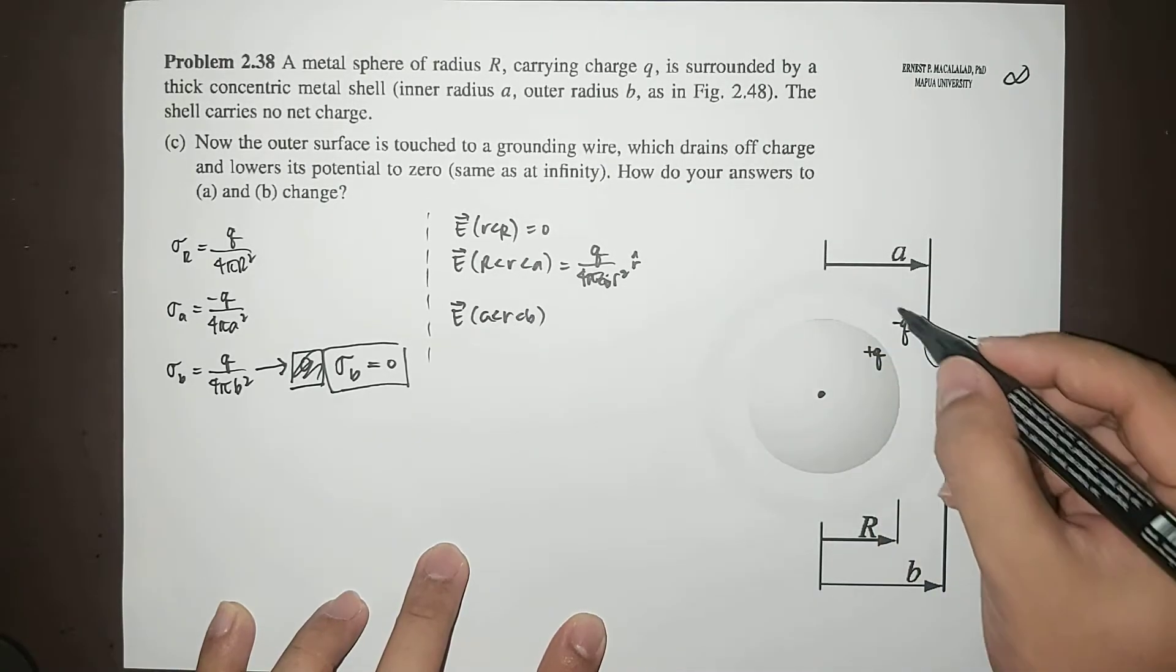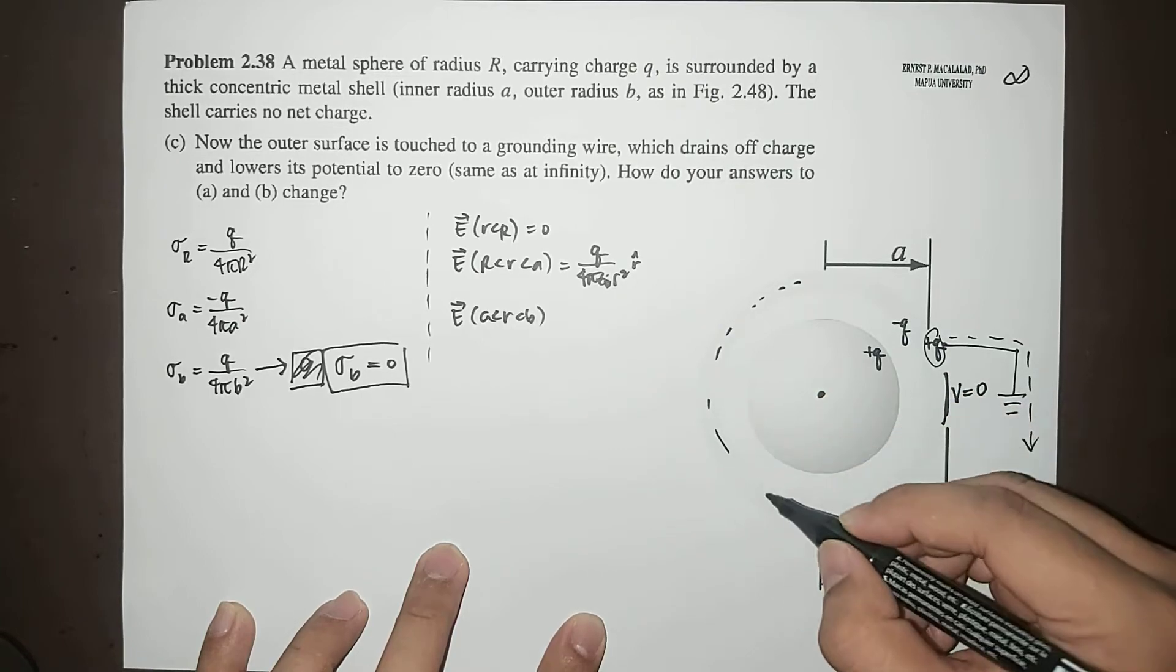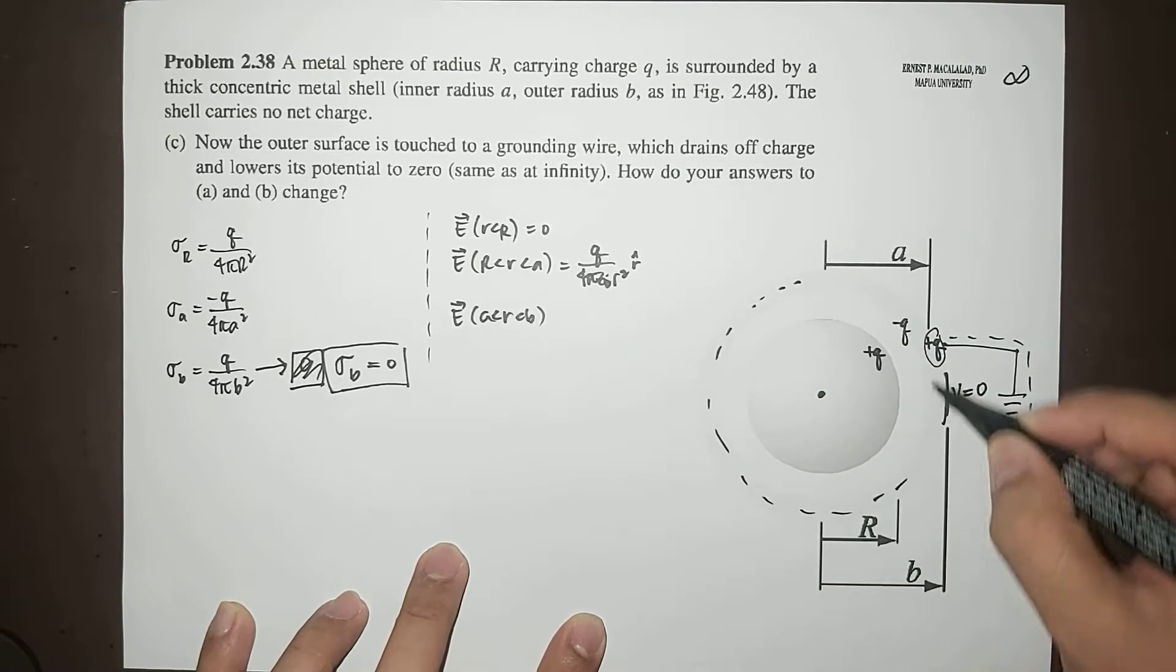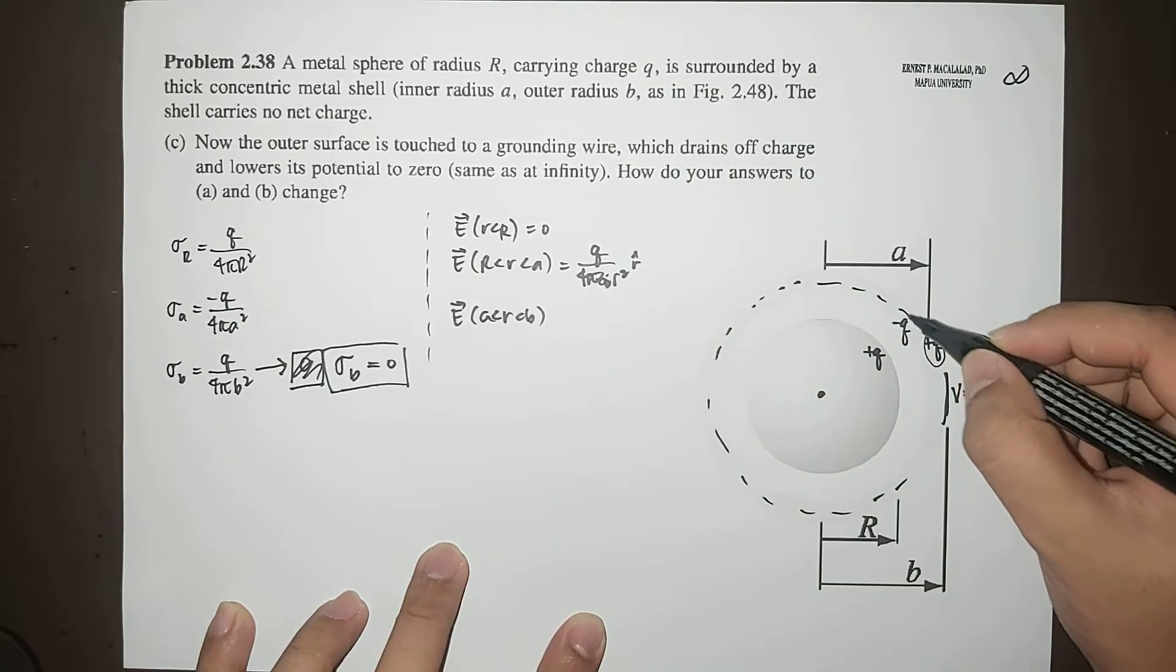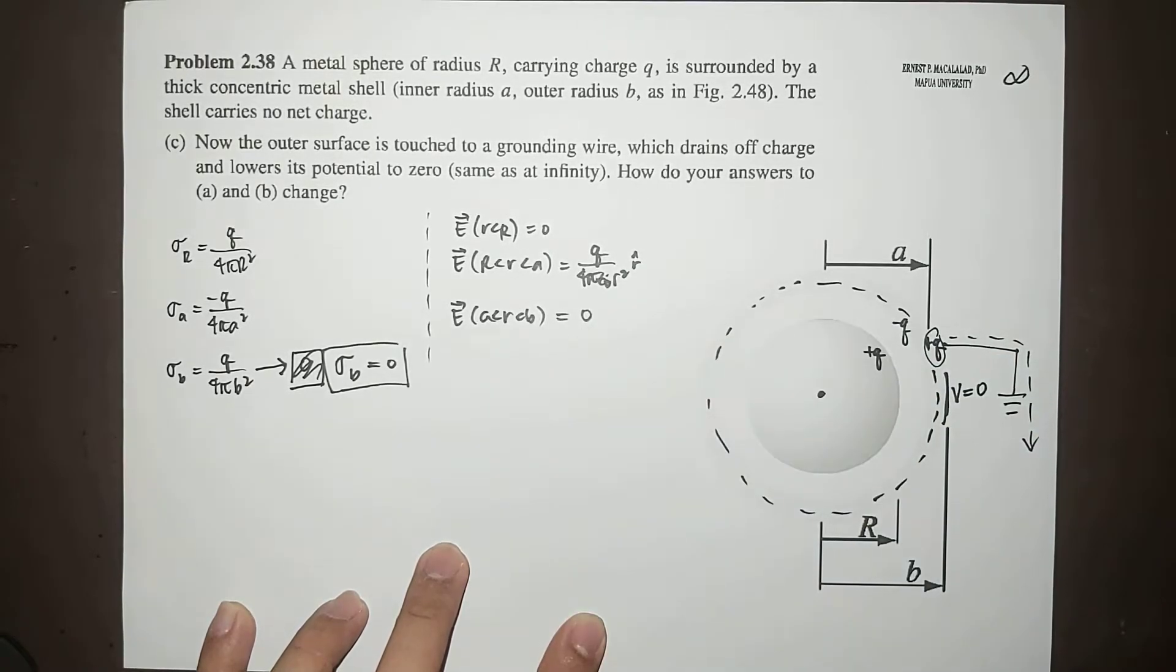Okay, however, at the region between A and B, you notice that if this is your Gaussian surface, the enclosed charge would now still be zero